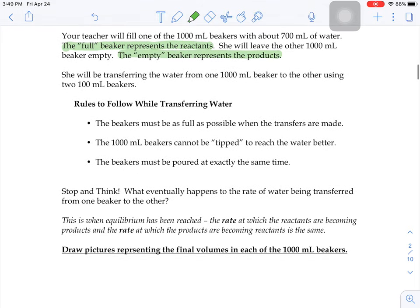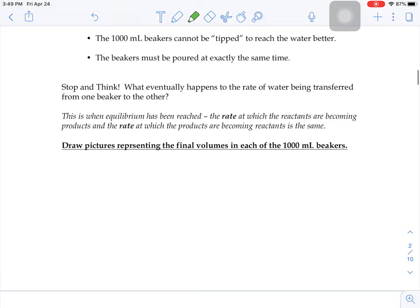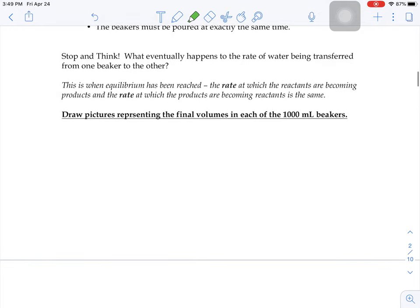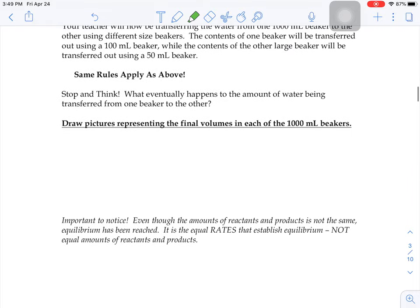They're going to do two different trials of this. One where the beakers that are being used to transfer the water back and forth are of equal size. And another trial where the beaker sizes that they're going to be transferring the water back and forth are of unequal sizes. And so as you watch that video, you can record some notes to yourself here about what it looks like when you have the two beakers of equal sizes transferring the water back and forth. And then what are the beakers look like at the end when you're using different size beakers to transfer the water back and forth. Go check out that video and then come on back after you've seen it.